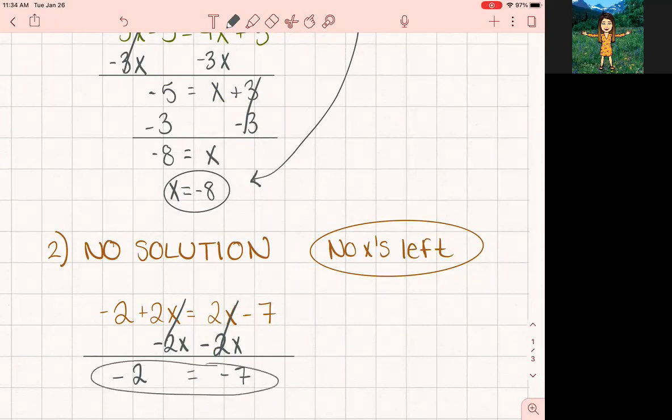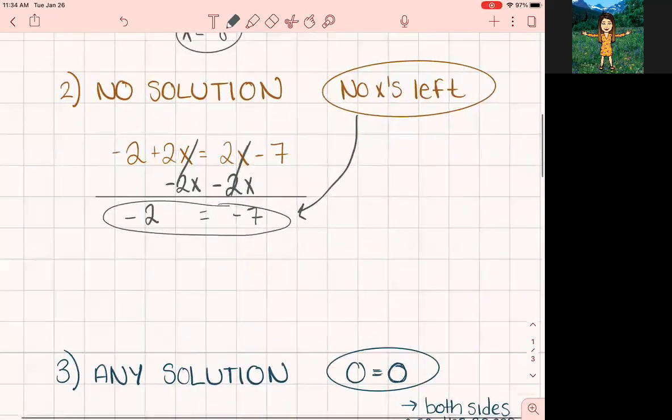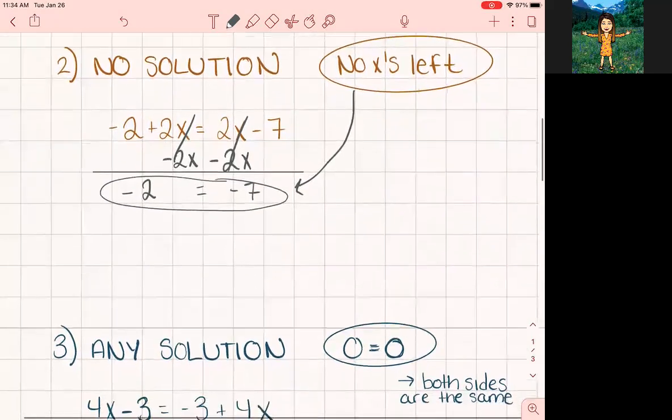So when you solve it, there are no x's left over. When that happens, your answer would be no solution. So your answers can be a number, it can be no solutions, or the third option is it can be any solutions.